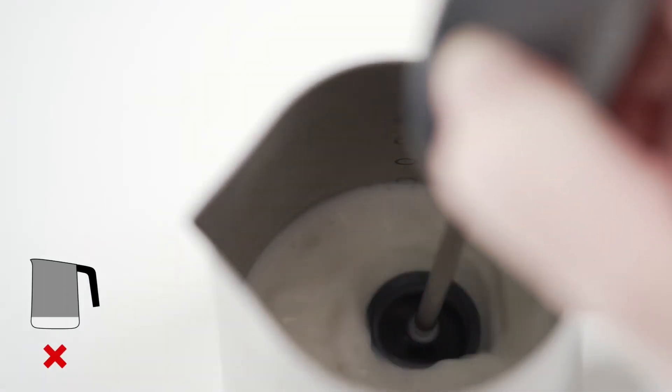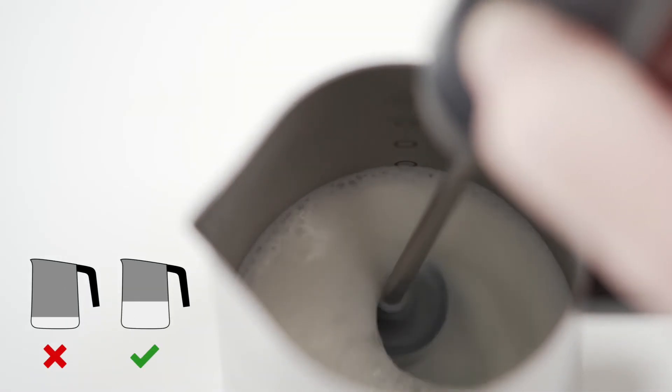You must have enough milk in the jug to completely submerge the impeller. Otherwise, big bubbles will occur.